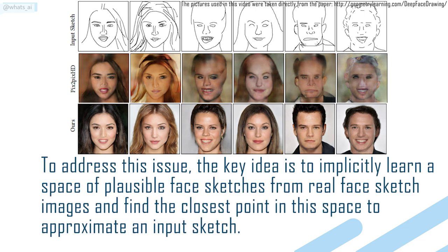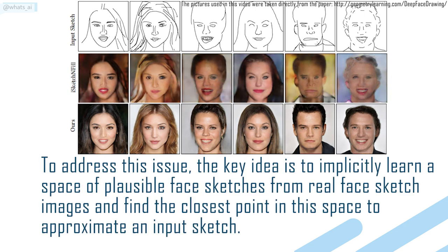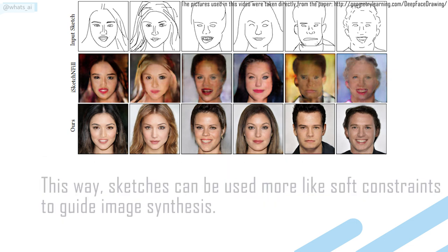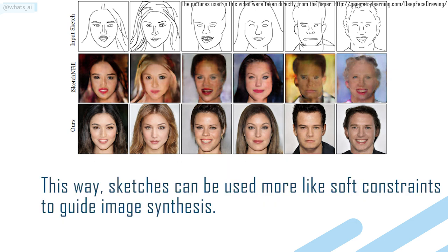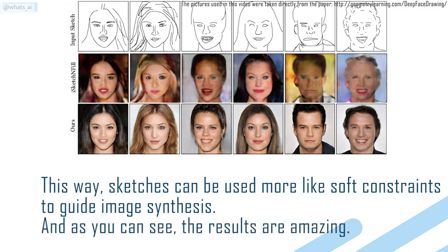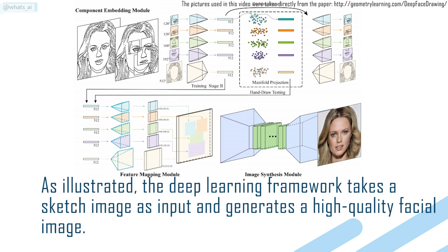To address this issue, the key idea is to implicitly learn a space of plausible face sketches from real face sketch images and find the closest point in that space to approximate an input sketch. This way, sketches can be used more like soft constraints to guide image synthesis. And as you can see, the results are amazing. The deep learning framework takes a sketch image as input and generates a high-quality facial image.